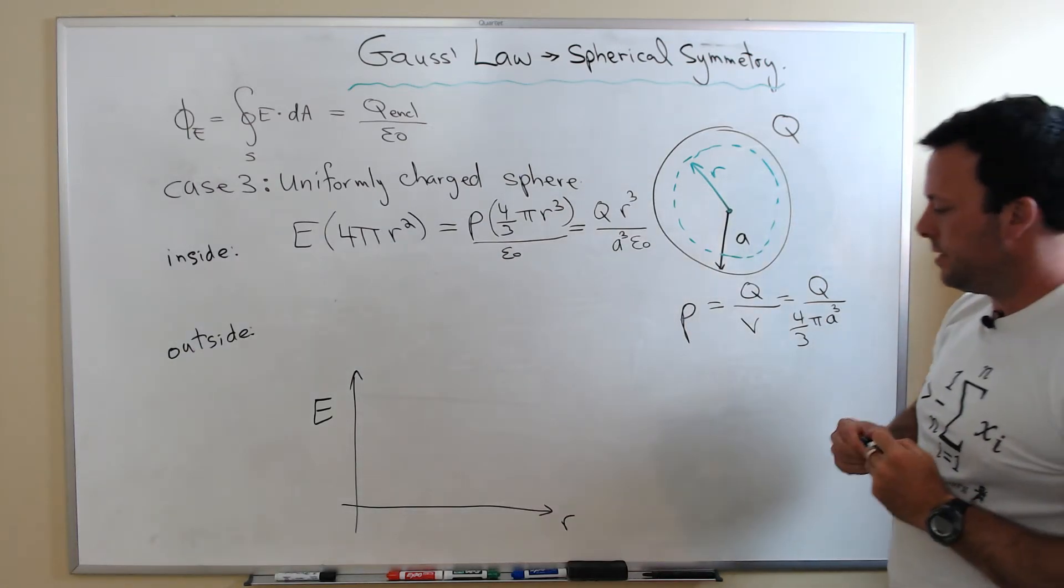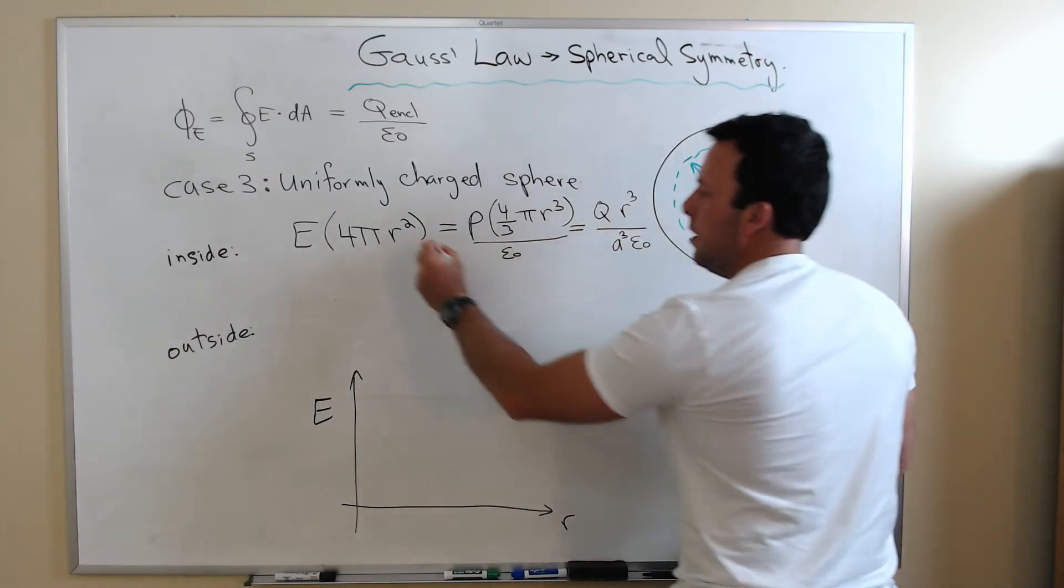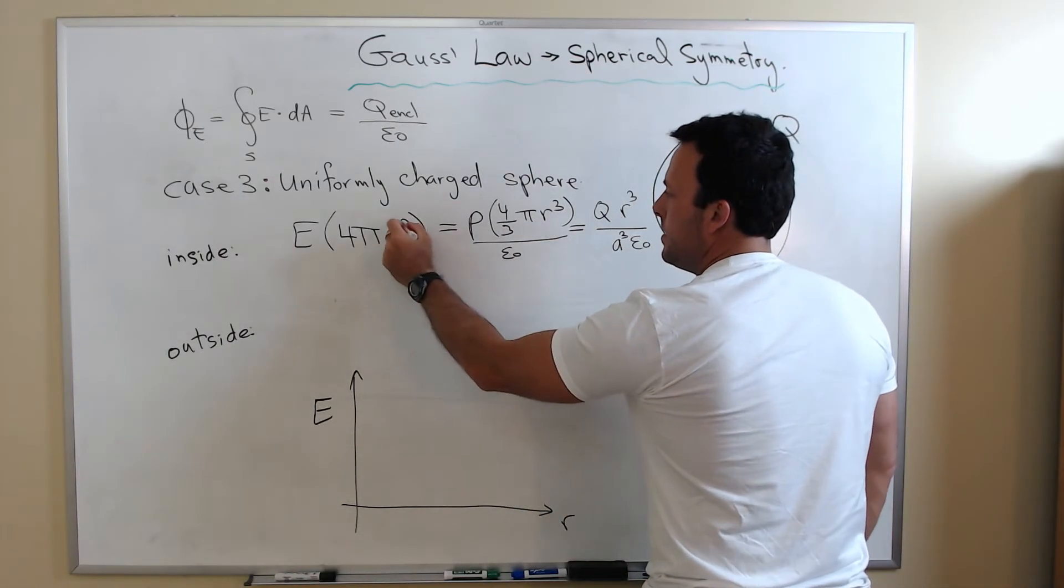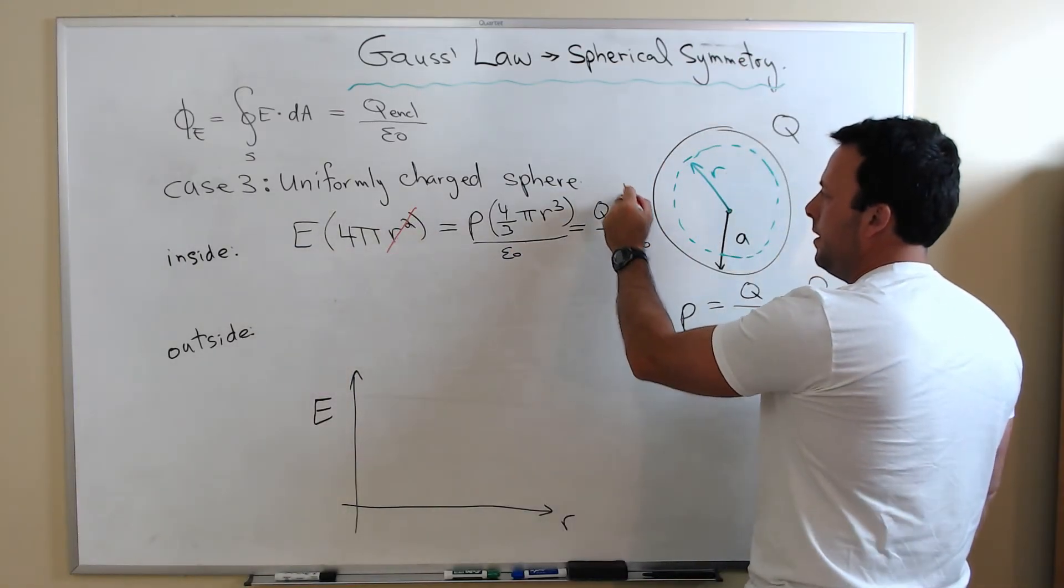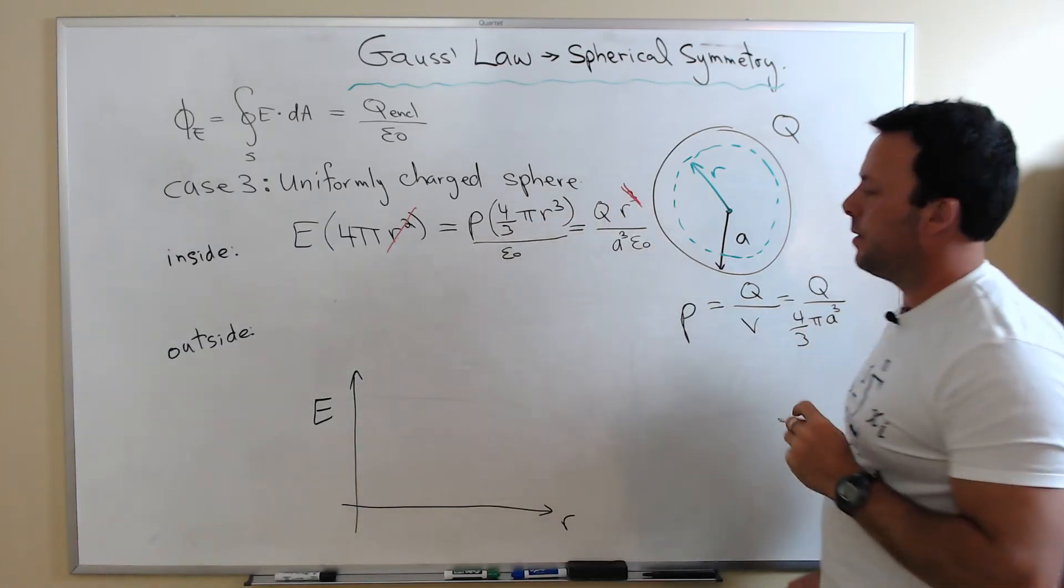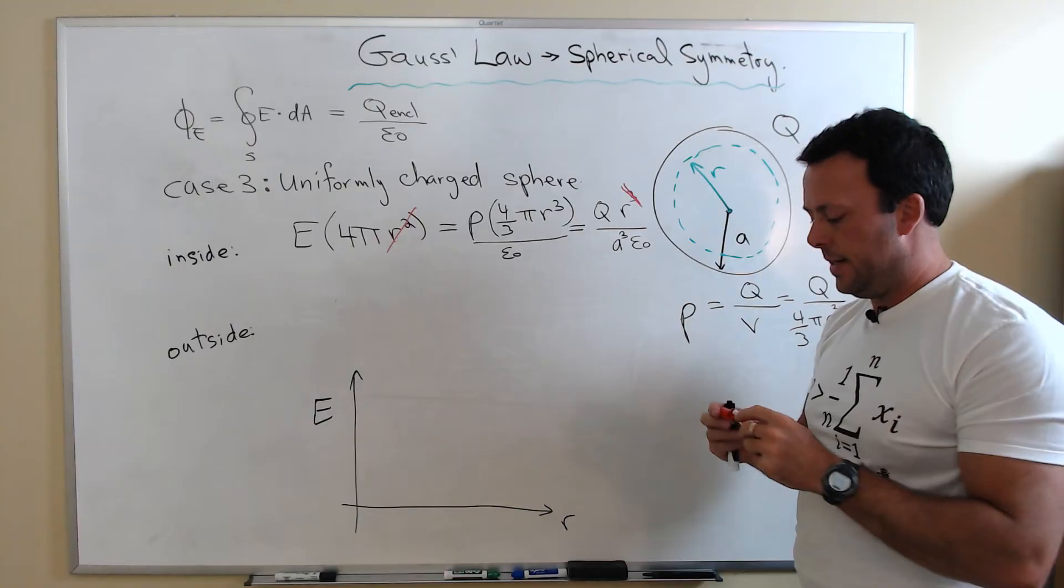Now I'm just about done. I just have to make some other simplifications. You'll notice I have an R squared dependence here on the left-hand side. I can get rid of that because I have R cubed over here. So if I can get rid of two of those, I'm left with only an R dependence on that side.